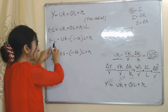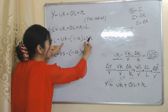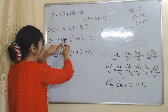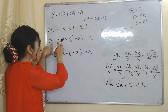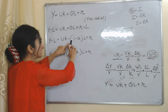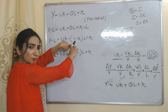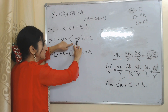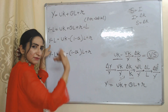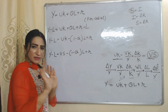Real income per head has a positive relationship with the growth rate in capital and technological progress — as technological progress and capital grow, real income per head will also grow. However, real income per head has an inverse relationship with the growth rate in population — as population grows more, real income per head will reduce.